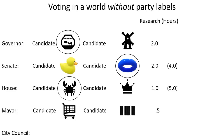Now they have to vote for mayor. They're getting a little tired, trying to figure out whether to vote for candidate Shopping Cart or candidate Barcode. After putting in another half hour, they're up to five and a half hours of research total, and they decide to vote for candidate Shopping Cart.